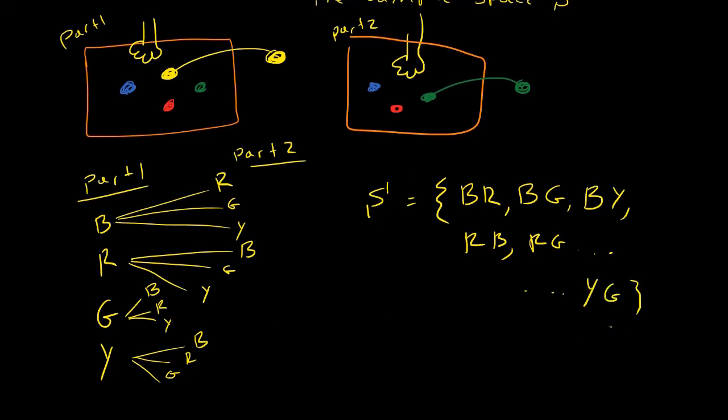They're not asking me to list out the sample space, though. They just want to know how many elements are in the sample space, or how many events are in the sample space. So this is an event, this is another event, this is another event. How many total events are there?